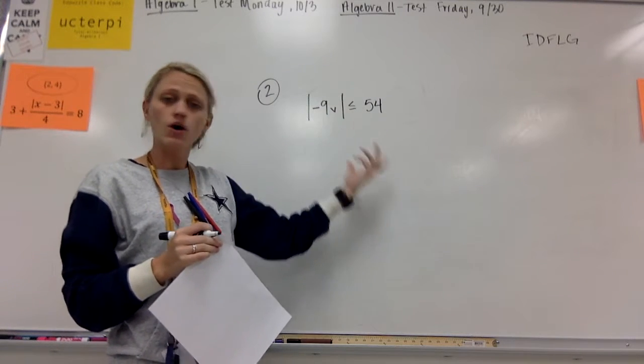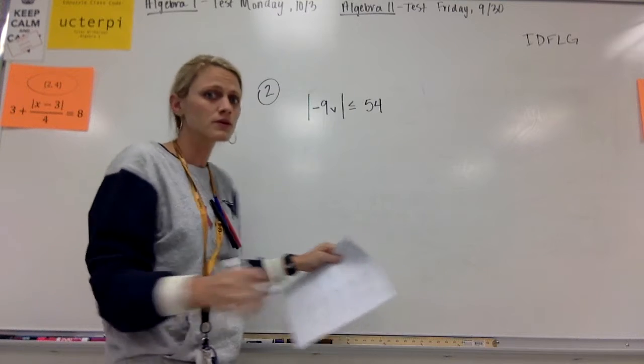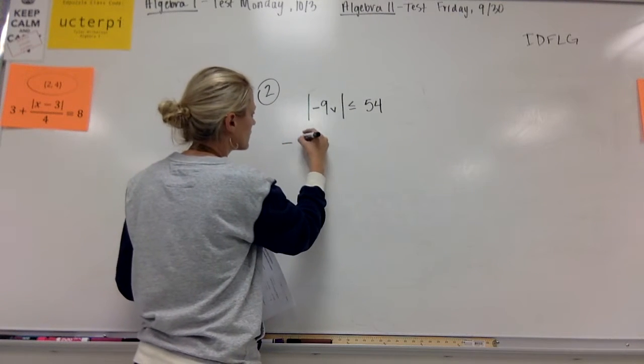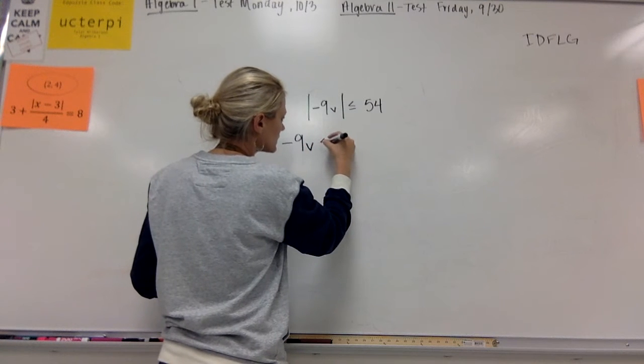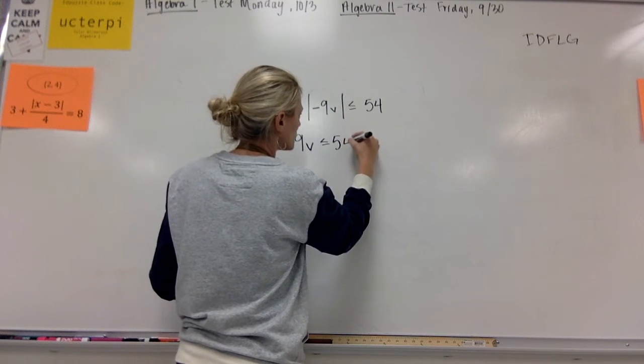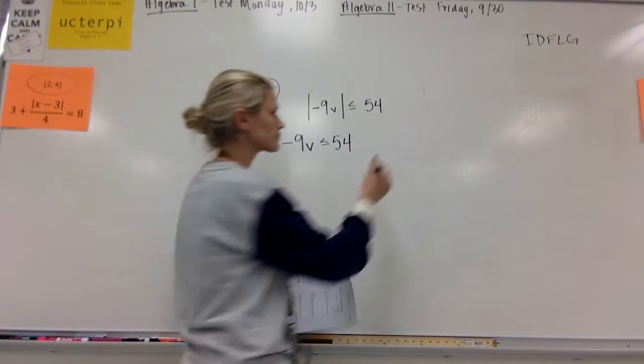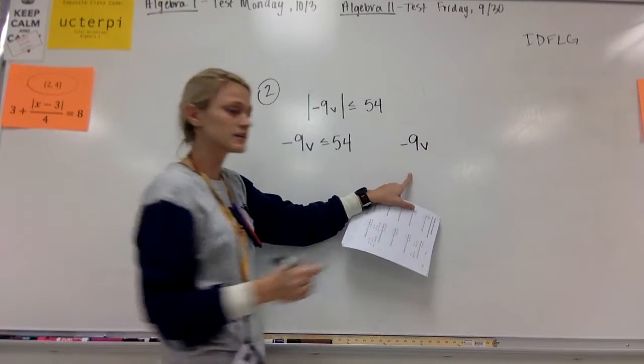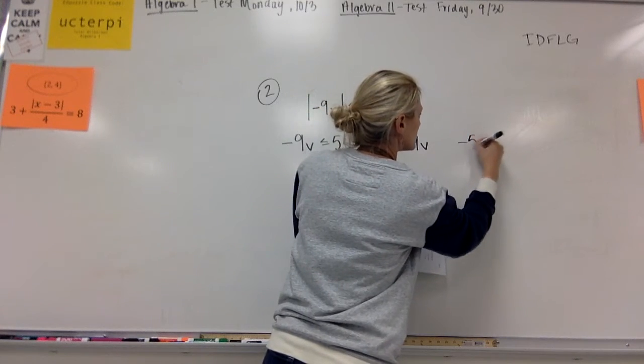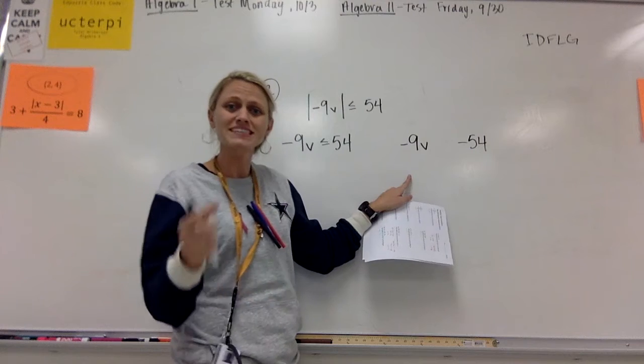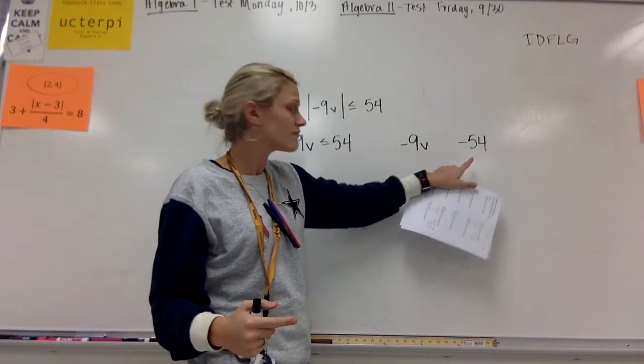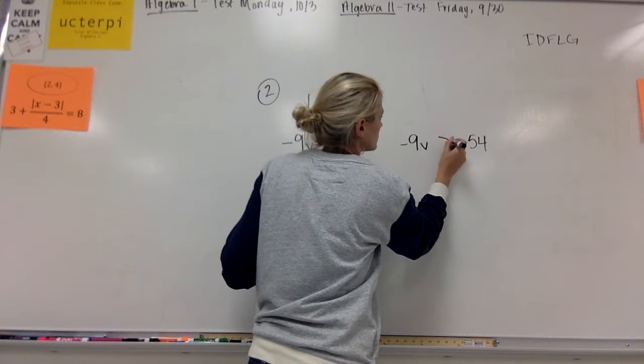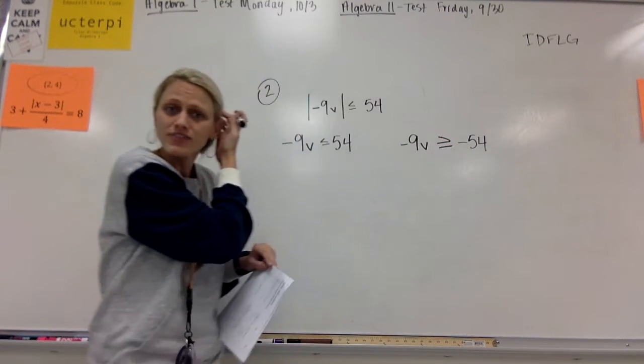My absolute value is already by itself. So now I just need to split it up into two different inequalities. So I'll have negative 9V is less than or equal to 54, the original. And then I'll also have negative 9V. Now remember, we've got to use negative 54. But when we make that 54 negative, our symbol has to flip around.